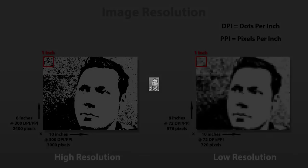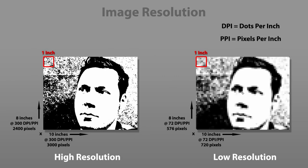Did you know that roadside billboards are printed at a very low resolution? This is because the farther you are from an image, the less resolution is required to see a clear image. The downside to working at 300 DPI or higher is that it creates a much larger file, which can make Painter run really slow even on a fast computer.